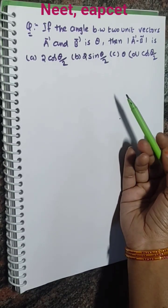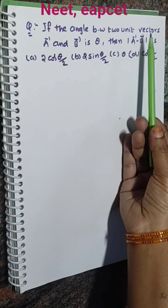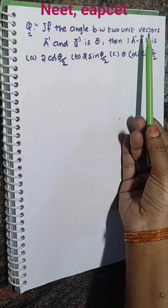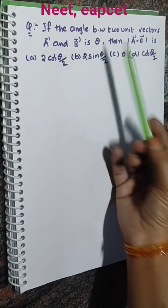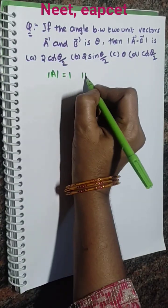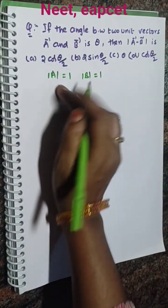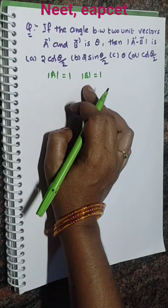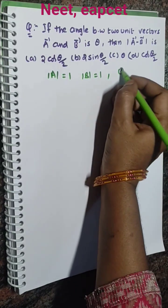So we already know what is meant by a unit vector. Unit vector is a vector whose magnitude is 1, and so the given is modulus of A equal to 1 and modulus of B equal to 1. That means both are unit vectors and the angle between them is theta.